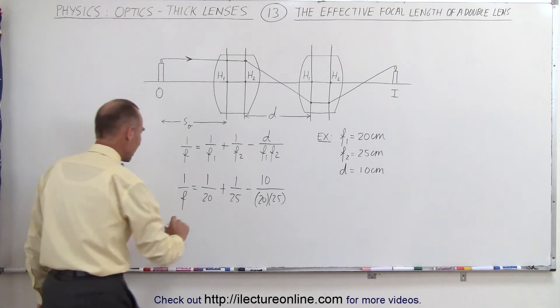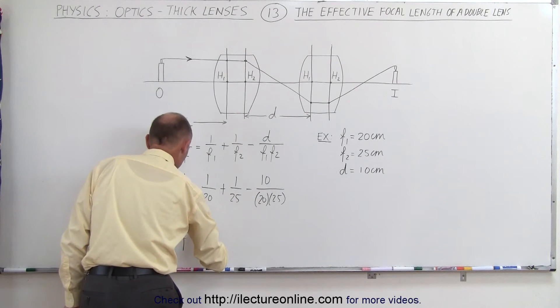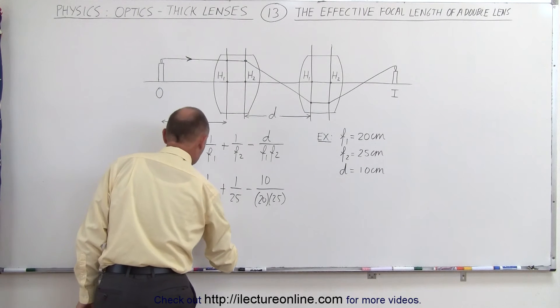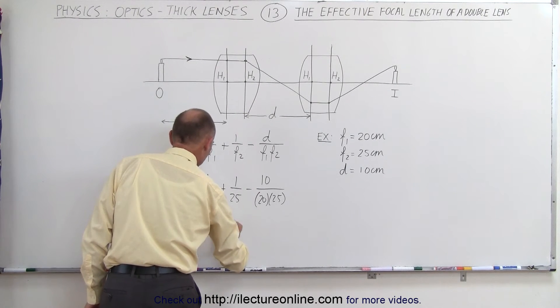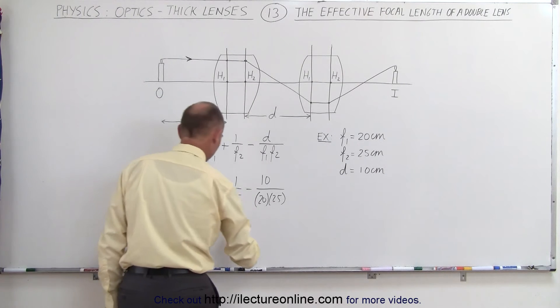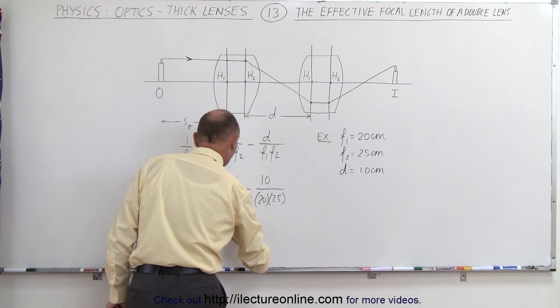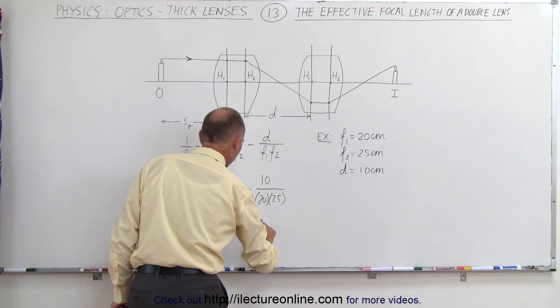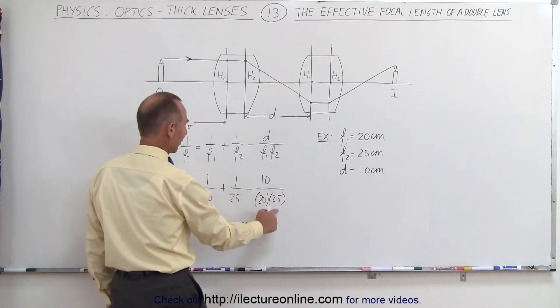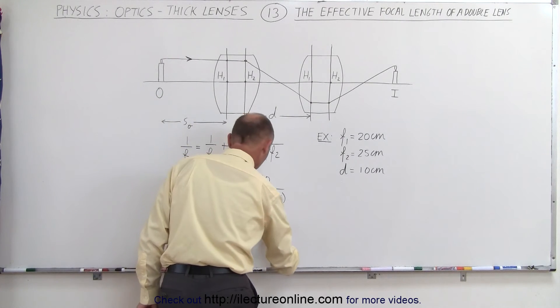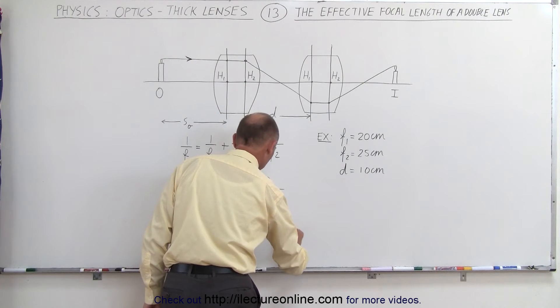Simplifying that a little bit, we get 1 over F equals 1 divided by 20 is 0.05 plus 1 divided by 25 is 0.04 minus 10 divided by 500 which is 0.02.